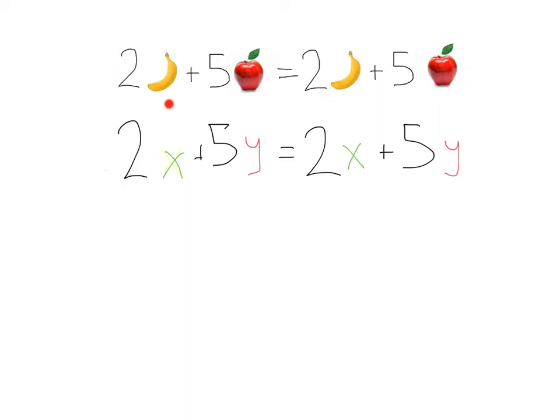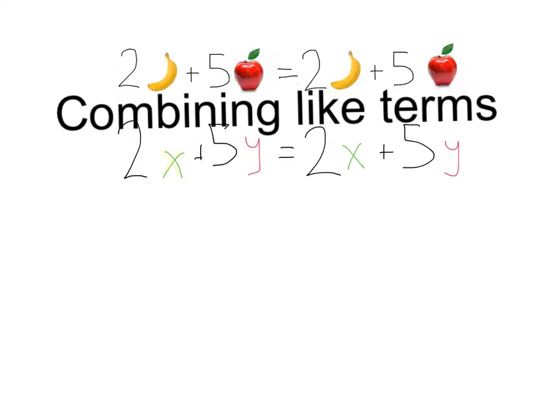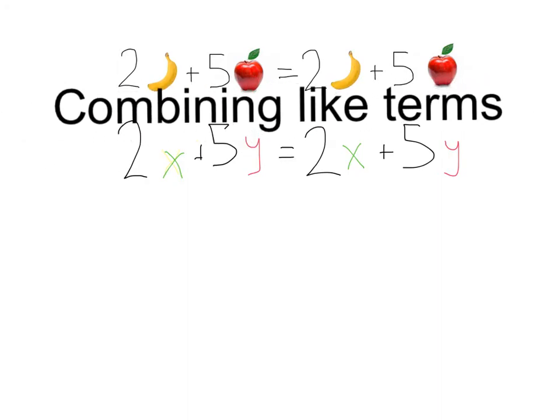We can think of these just like two different variables, like an x and a y. Here we have two x's and five y's. We can't combine those, so we just end up with two x's and five y's. You may have learned this concept before as combining like terms, and that's exactly what it is. But in order for something to be a like term, it has to be exactly the same. Let's do some examples.